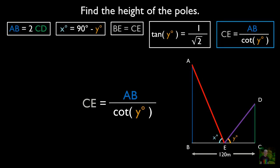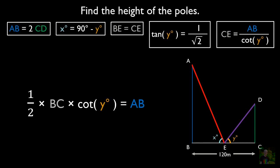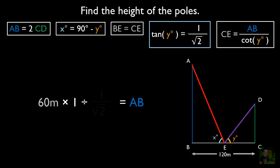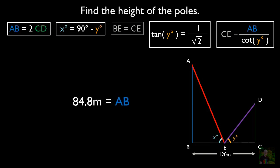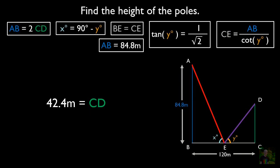Since CE equals AB by cot Y, after cross-multiplying, cot Y goes to the left-hand side. CE equals half of BC as E is the midpoint of BC, and BC equals 120 meters, so CE equals 60 meters. Since cot equals 1 by tan and tan Y equals 1 by root 2, after reciprocating and calculating, we get AB as 84.8 meters. Since AB equals twice CD, CD equals 42.4 meters.